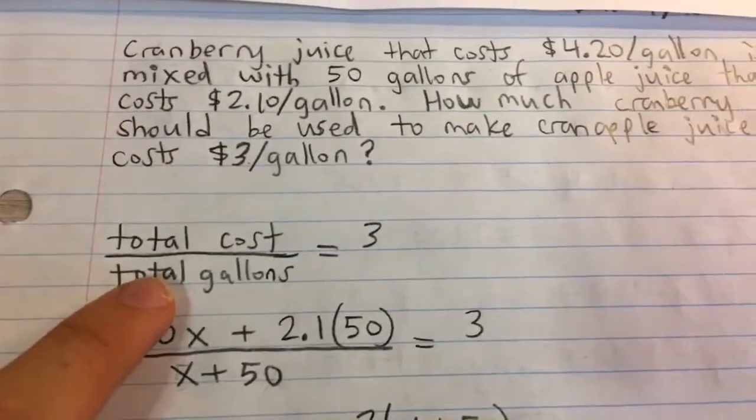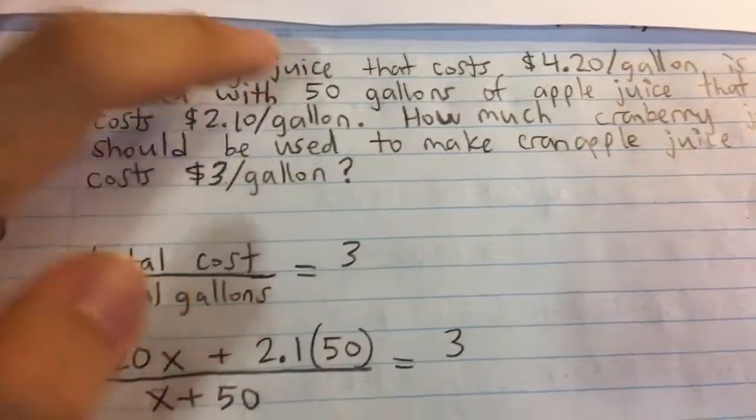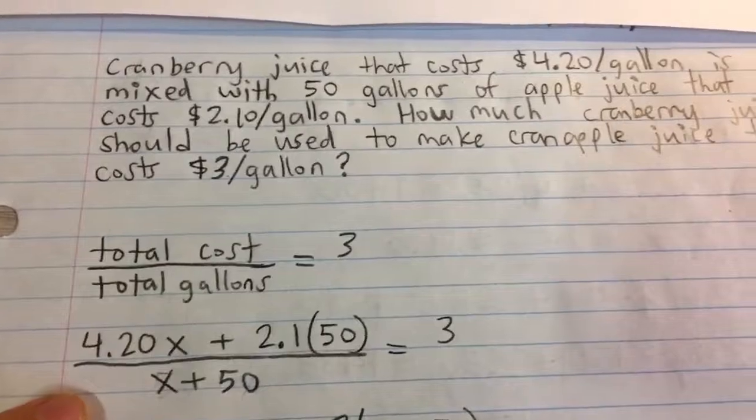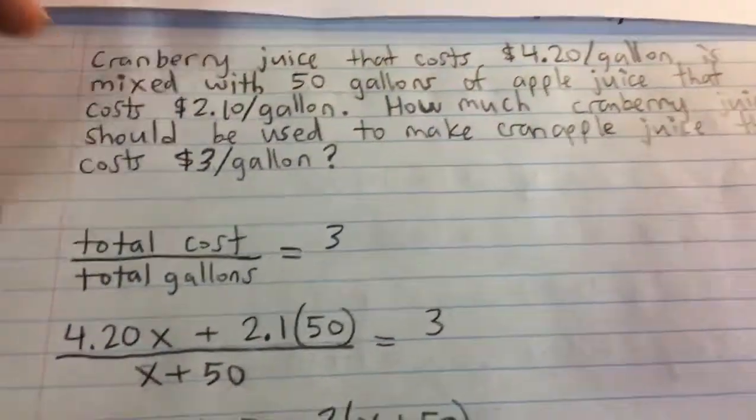And the total of gallons, well, we know the gallons of apple juice, that's 50. But the cranberry juice is going to be our x variable. That's how much cranberry juice we're going to be adding.